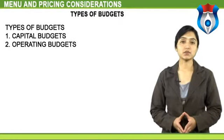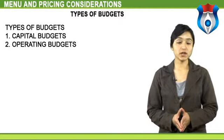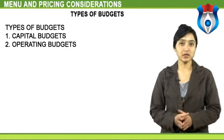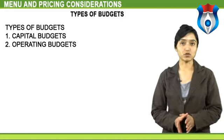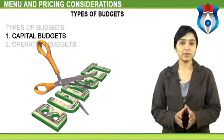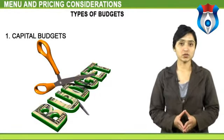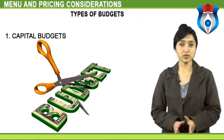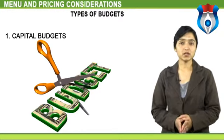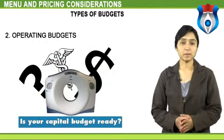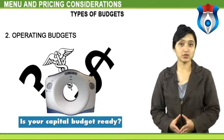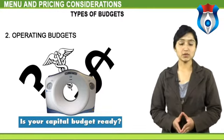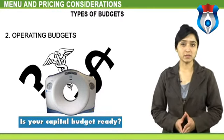There are various kinds of budgets used in food and beverage operations. Basically, there are two main types: capital budgets and operating budgets. Capital budgets are concerned with the assets and liabilities of an establishment — for example, equipment, plant and cash. Operating budgets are concerned with the day-to-day income and expenditure of an establishment and include sales, cost of sales, labor, maintenance, head office expenses, etc.